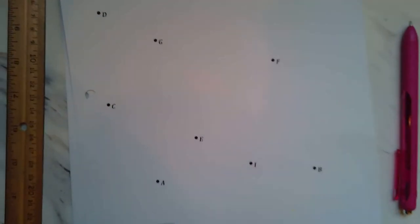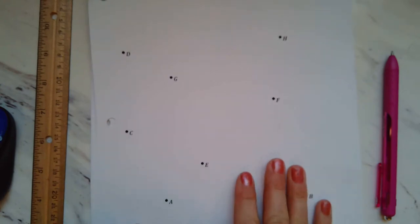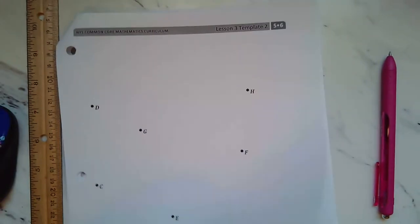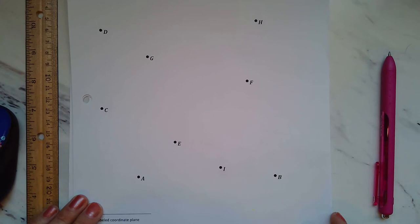This is Module 6, Lesson 3, Part 2. You're looking at the back page of your problem set. The back page of your problem set has this resource page on it. So what we're going to do together is we're going to create a coordinate system right here on this paper.